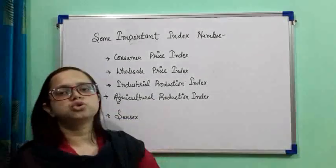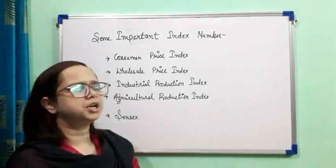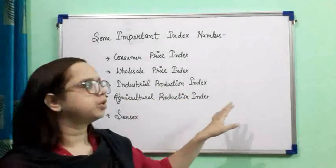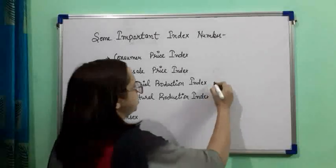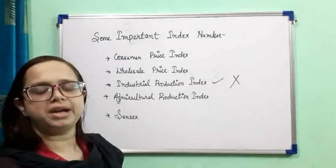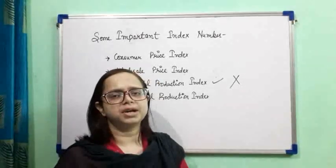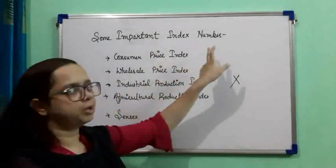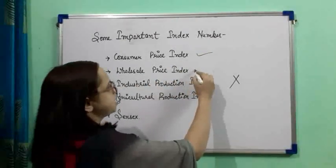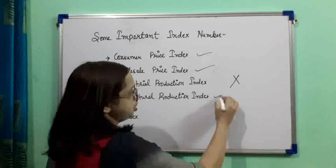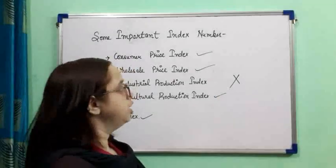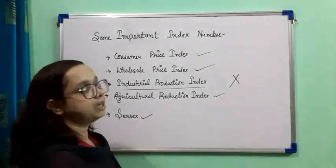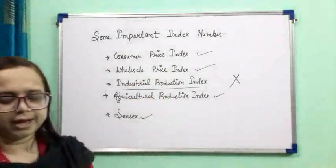Due to COVID, the syllabus has been reduced by 30%. So you do not need to study the Industrial Production Index and the Agricultural Production Index. We will now discuss the remaining ones — Consumer Price Index and Sensex — one by one in detail.